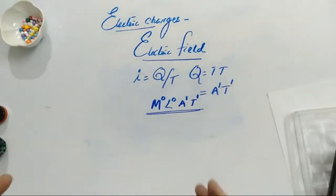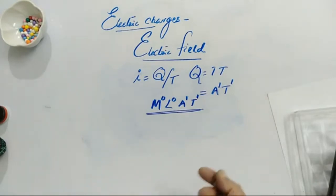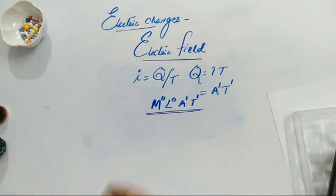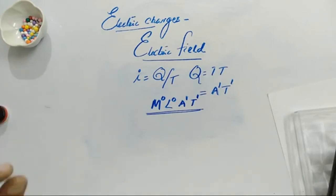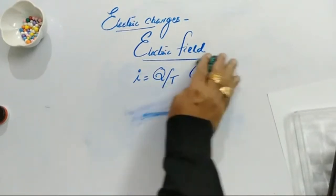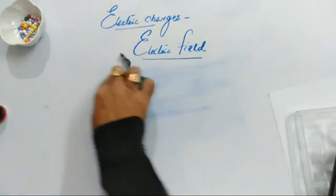Till now we have covered: what is electric charge, whether it is scalar or vector, and we have defined electric charge. We have also seen some properties — like charges repel, unlike charges attract.